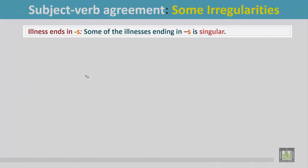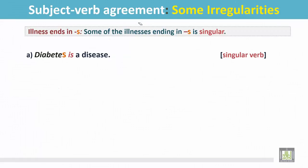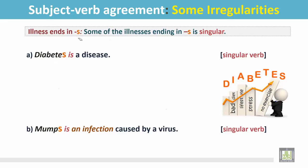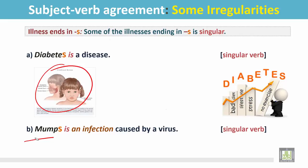Some illness names ending in S are also singular. Example: 'Diabetes is a disease.' There are many reasons for it. This noun ends in S, but it is a singular noun, so the verb is singular. Another example: 'Mumps is an infection caused by a virus.' The name of this disease ends in S. It's not plural — it is a singular noun, so the verb is singular.